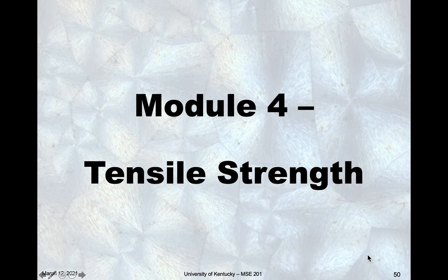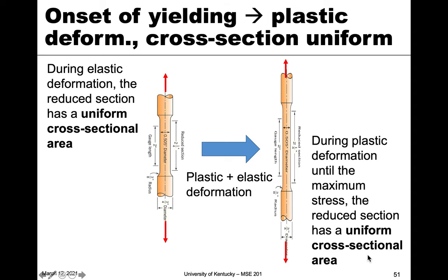In this module, we're going to look at another of the plastic properties of a material, and that is known as the tensile strength. We've just finished talking about the yield point, or where plastic deformation begins. Tensile strength also denotes another portion of the stress-strain behavior.